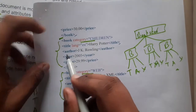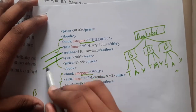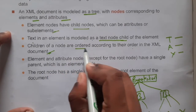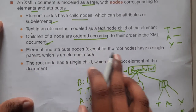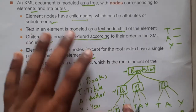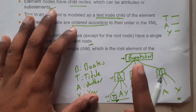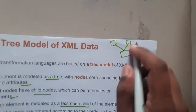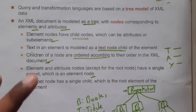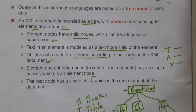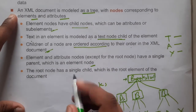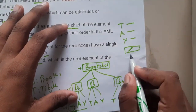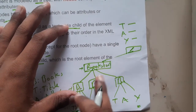Children of a node are ordered according to the XML document order. The order in which you write title, author, and year in the XML is the exact same order represented in the tree. Ordering is important and must be maintained. Also, every element and attribute node — except the root — must have a single parent. No node can have two parents; if it does, the XML markup is written incorrectly.